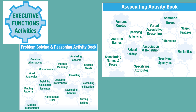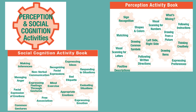The executive functions domain is divided into two books that include a variety of activities addressing problem solving, reasoning, and associating. These activities are especially fun and challenging when working in small groups with clients that have mild cognitive impairment. The last domain is perception and social cognition, divided into two books. The activities included in this domain are especially appropriate for clients with right hemisphere disorder or traumatic brain injury.